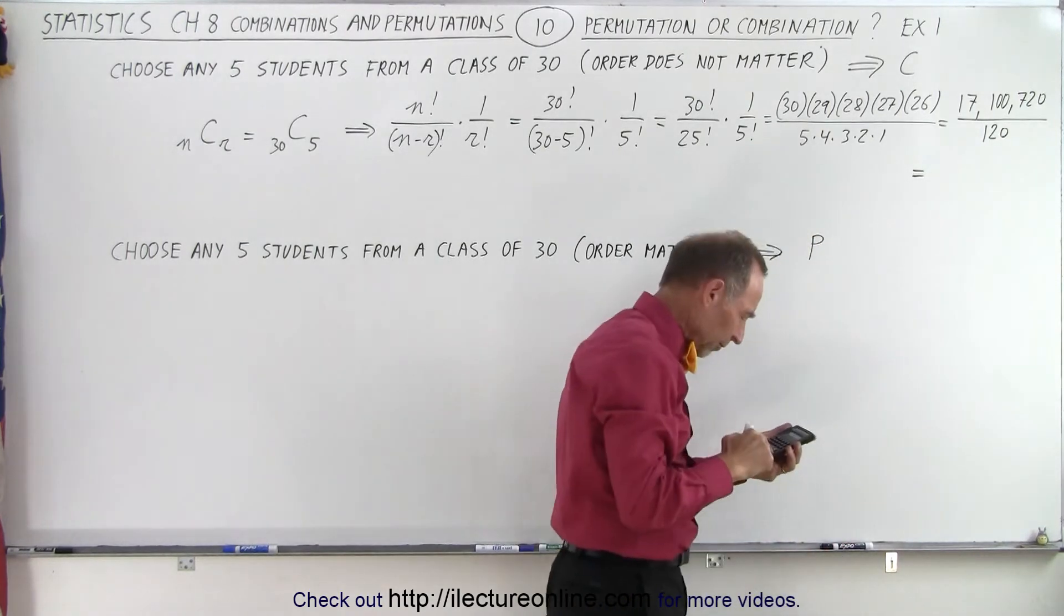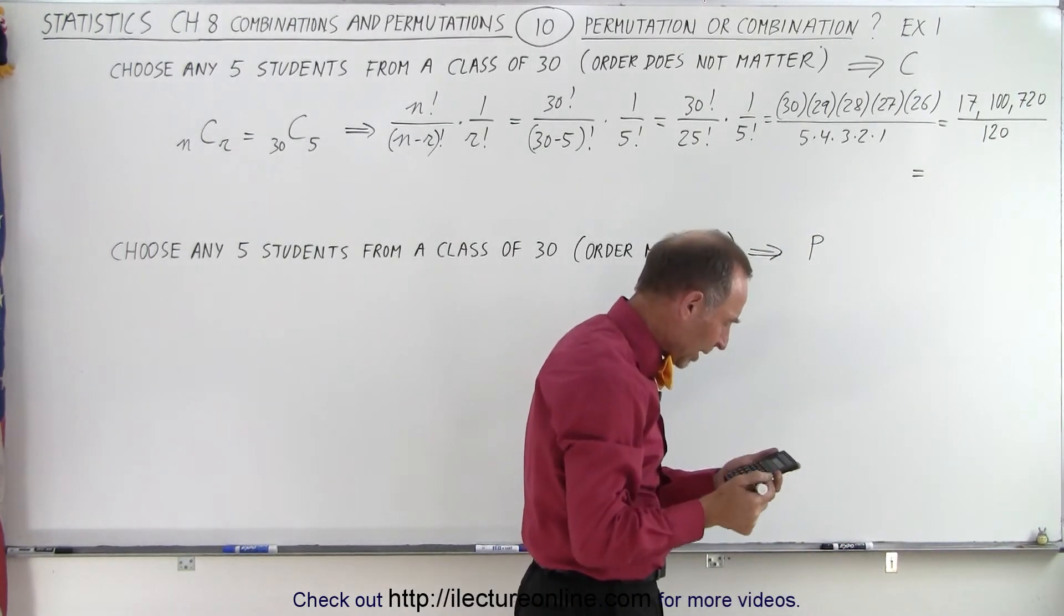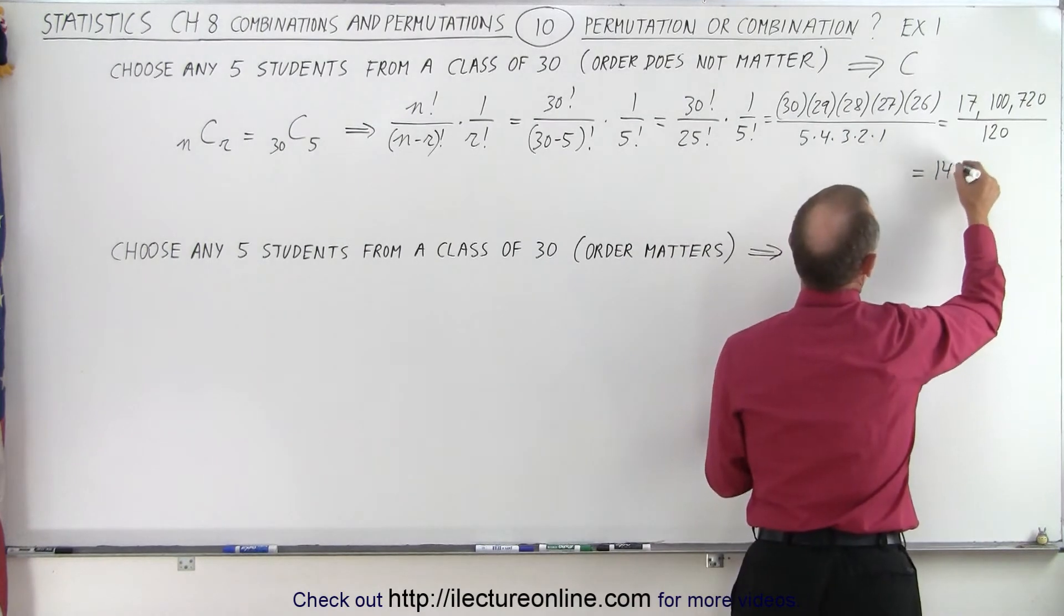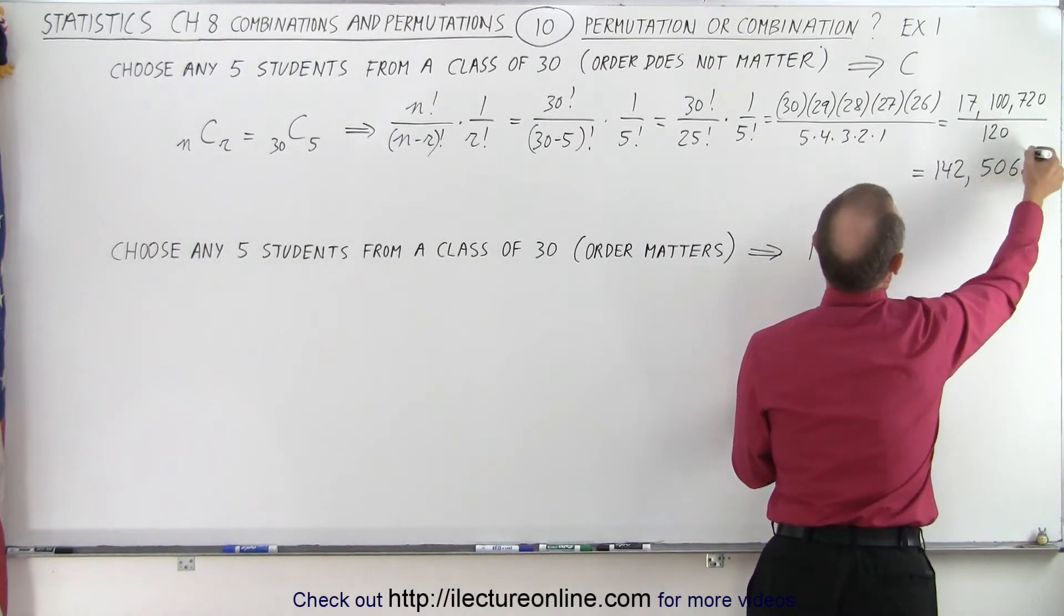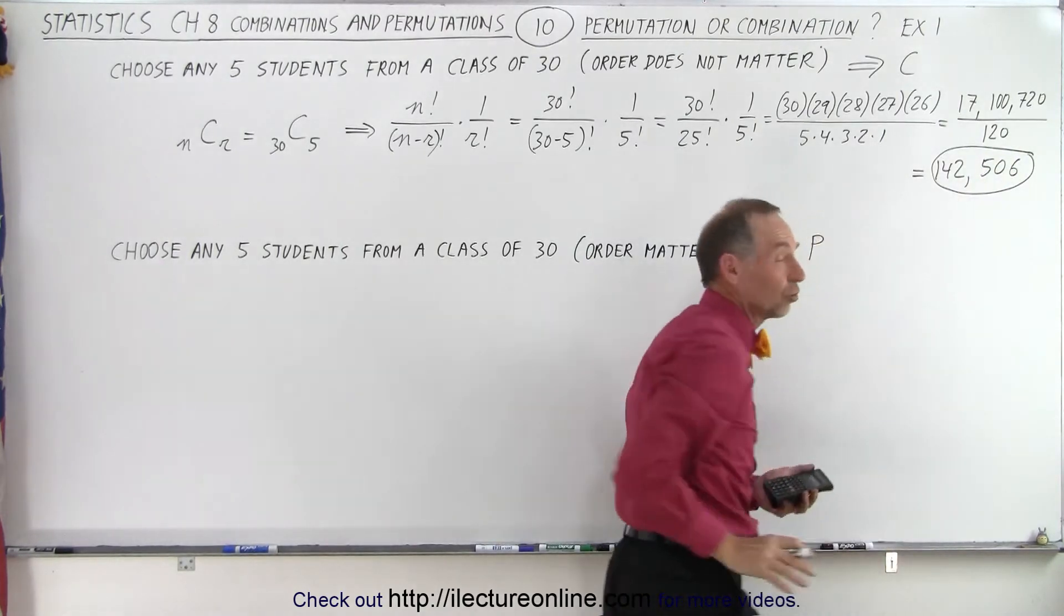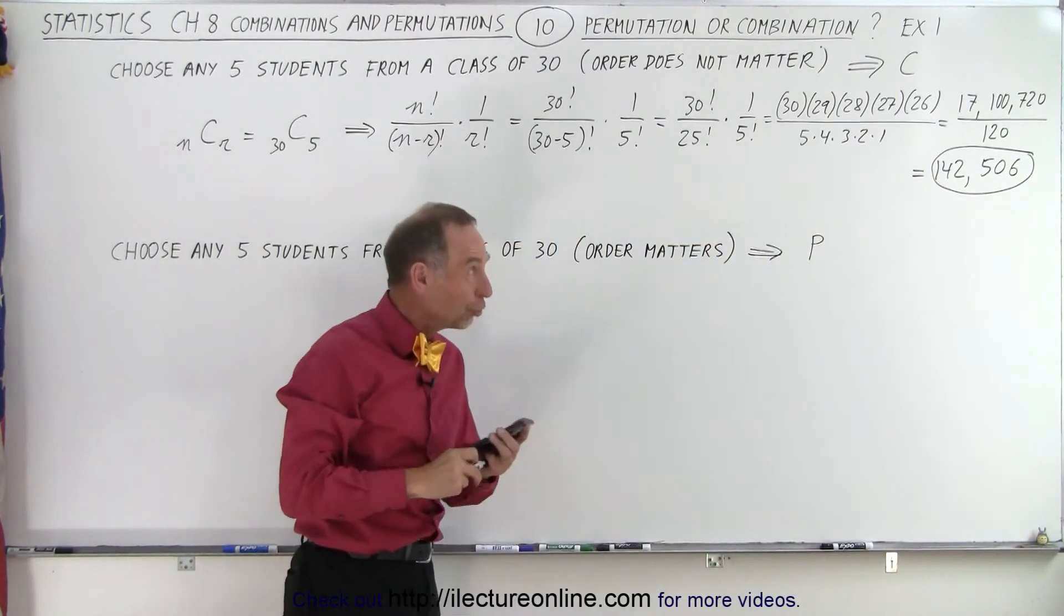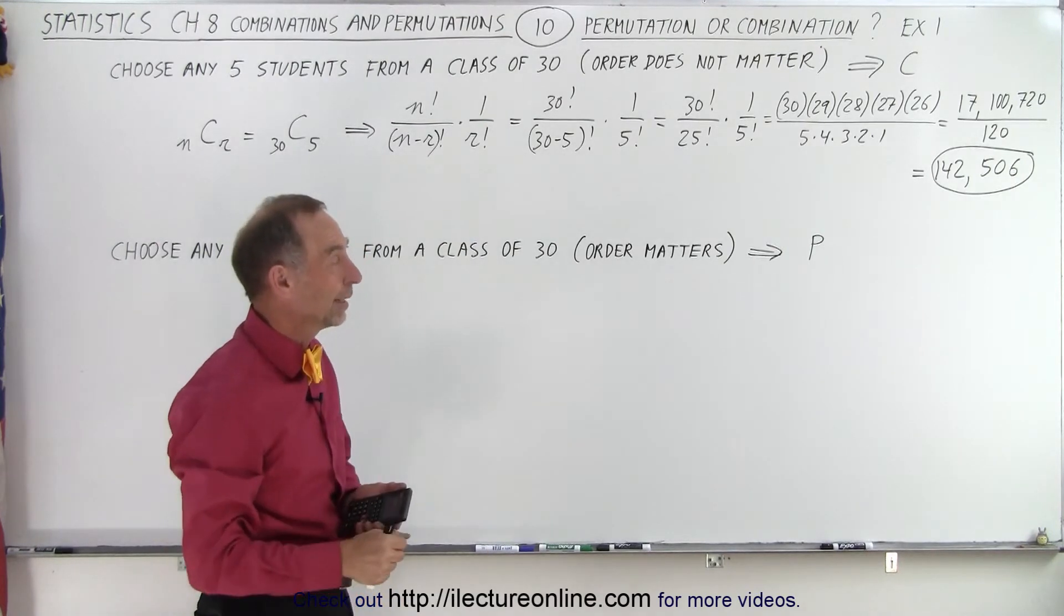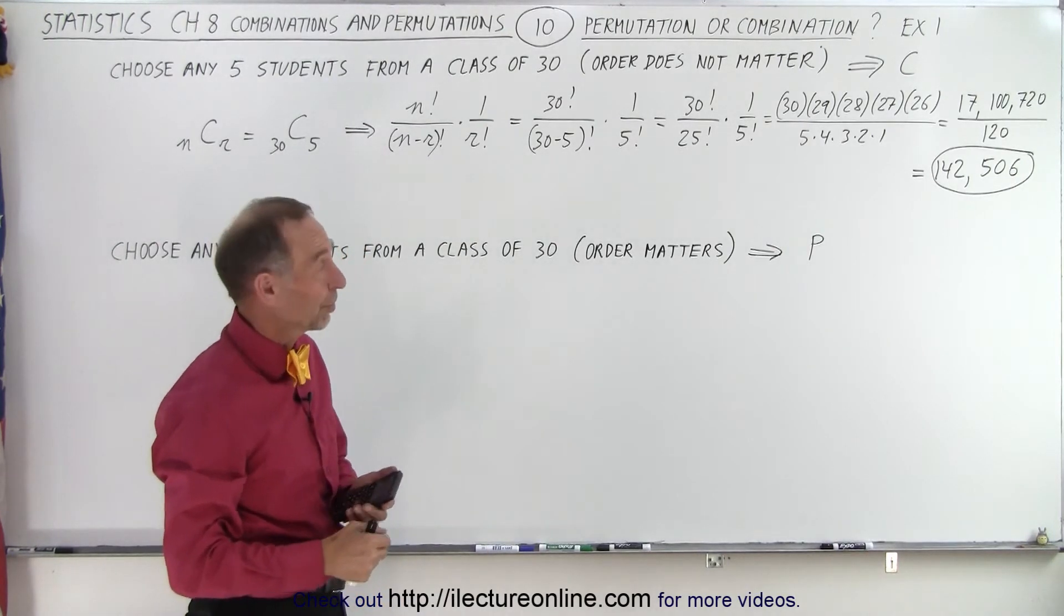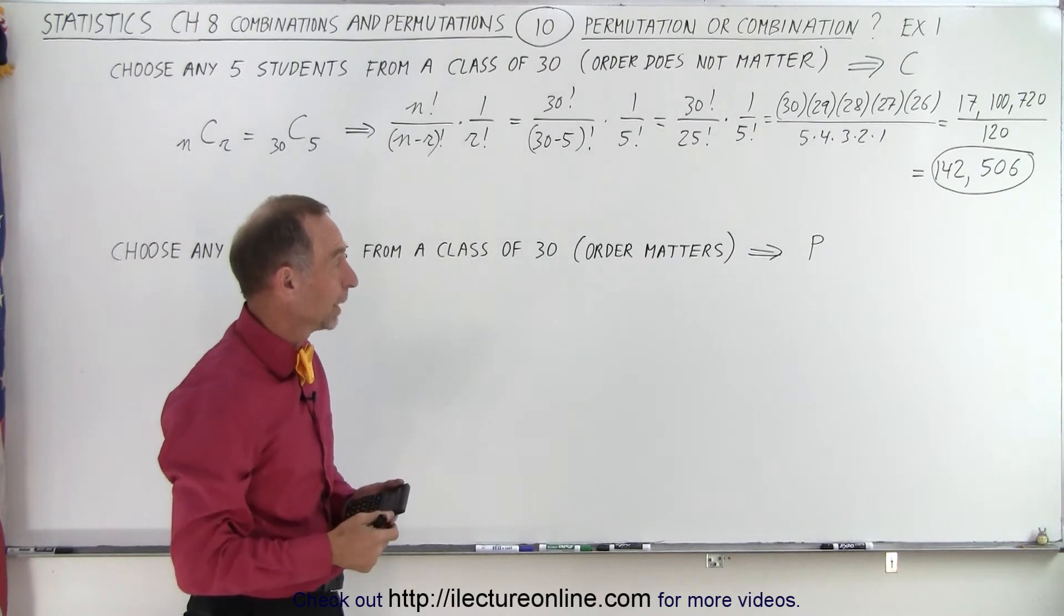So divide this by 120 and we get 142,506 possible combinations. That's the total number of combinations in which you can pull 5 students out of a class of 30. That's actually a really big number, especially when the order doesn't matter.